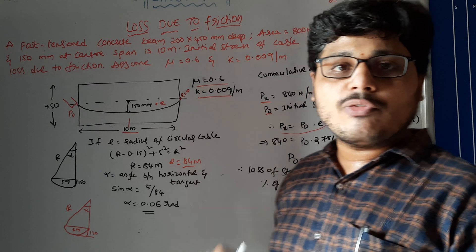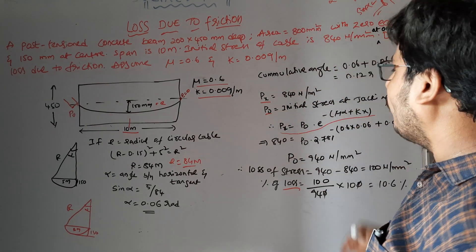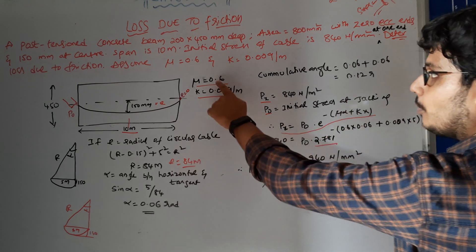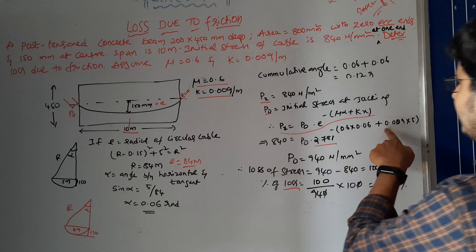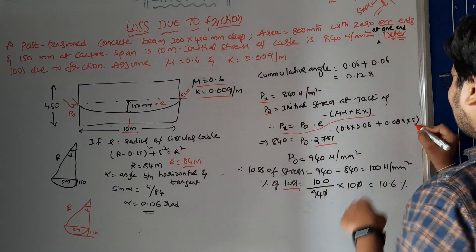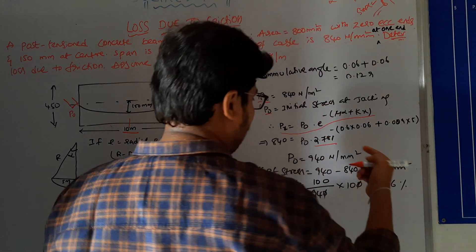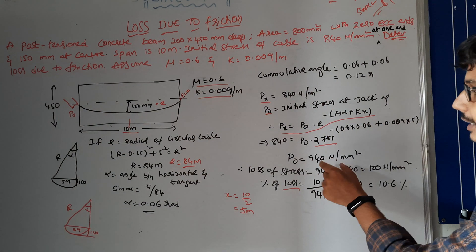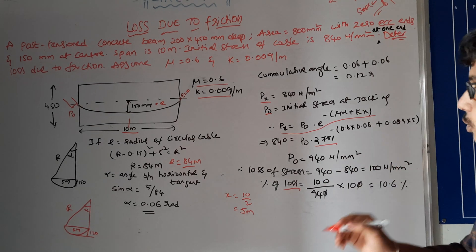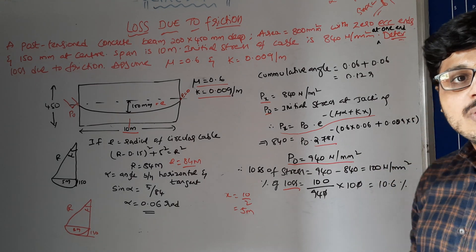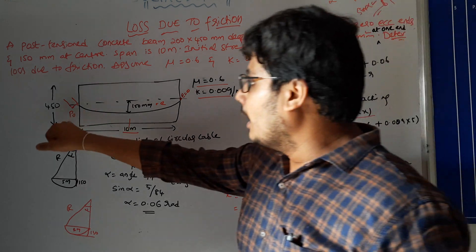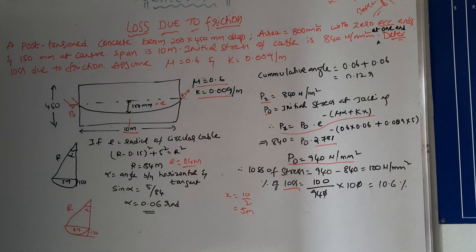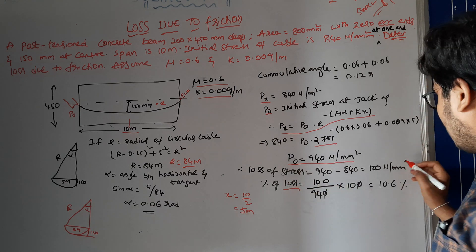Since Px = 840 N/mm² at one end is given, we solve for P0. Substituting: 840 = P0 × 2.7183^(−(0.6 × 0.06 + 0.009 × 5)), where x = 10/2 = 5 meters. Solving this gives P0 = 940 N/mm². The overall loss of stress is therefore 940 − 840 = 100 N/mm².